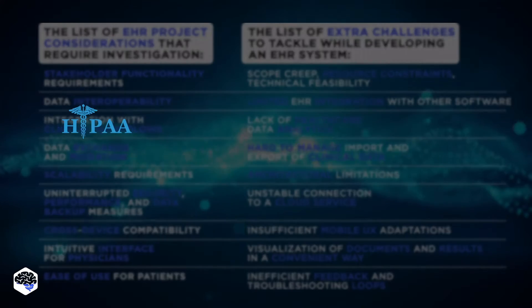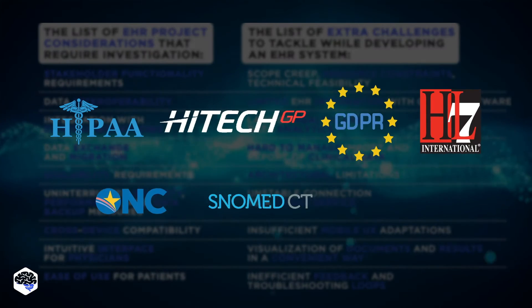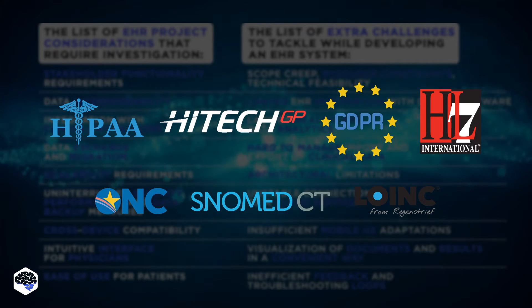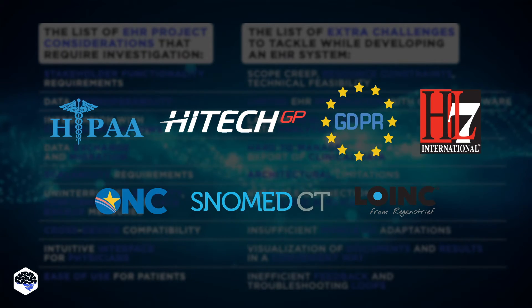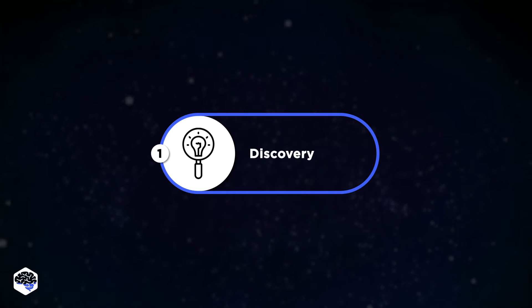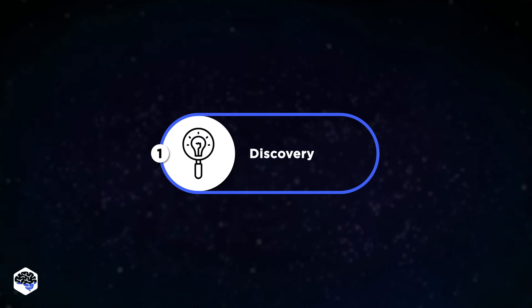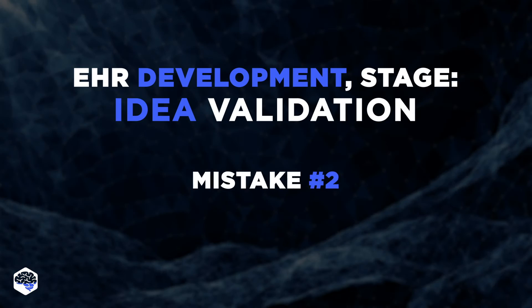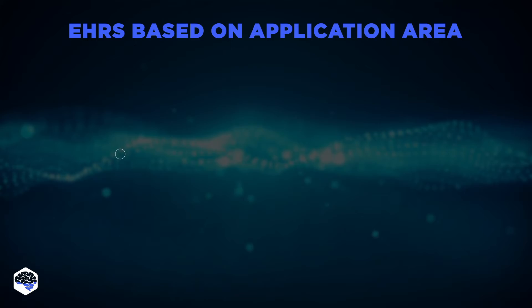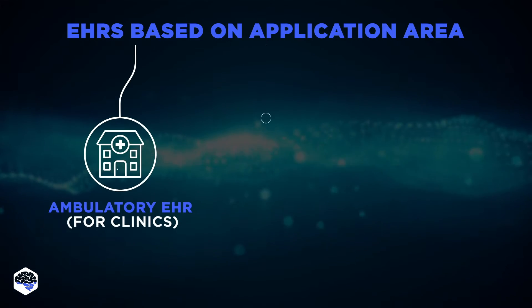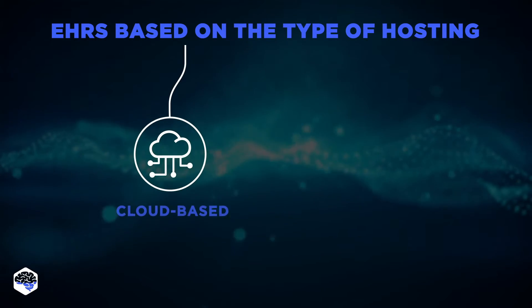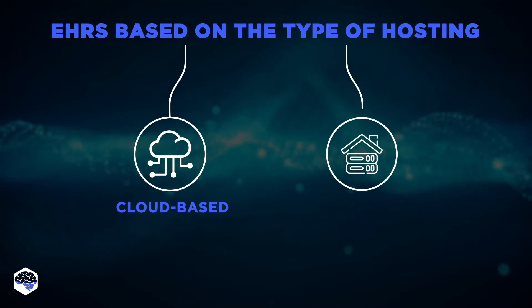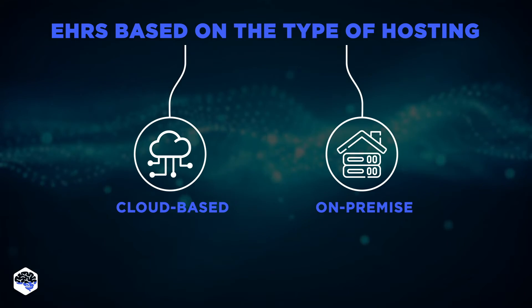Another crucial aspect is adherence to regulatory compliance standards, since a failure to do so could result in legal liabilities along with operational and security risks. Once all these specifications are gathered, the next step is defining the right type of EHR solution. The challenge here lies in the wide variety of EHR systems based on the area of use and the type of hosting, and selecting the wrong one could lead to an unsuccessful project result.